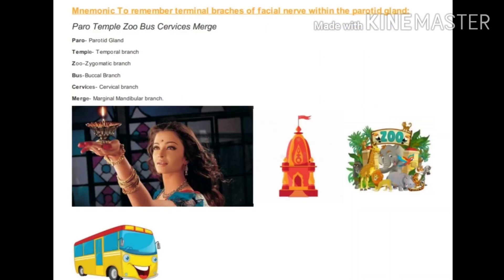Our third mnemonic is to remember the terminal branches of facial nerve within the parotid gland. The mnemonic is: parotemple zoo bus services merge. Here you have to remember a story. There was a movie called Devdas where there was a character named Parot. In our story, Parot wants to visit a temple and a zoo, and she finds that the bus services to these two places are different, so she wants to merge the bus services so that she can board only a single bus.